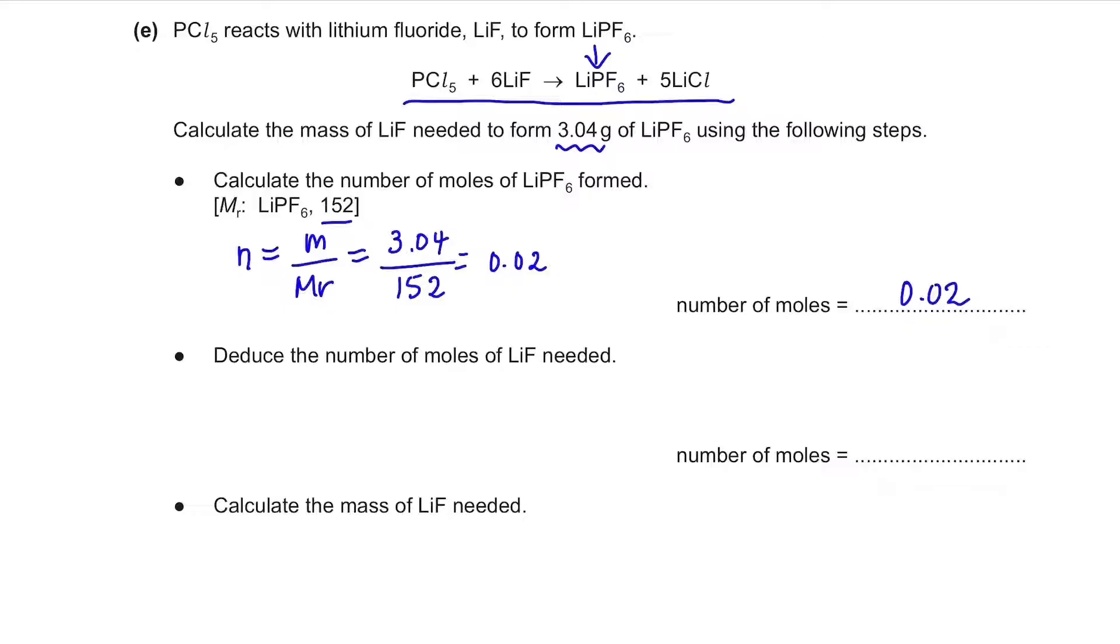Next, deduce the number of moles of LiF needed. We can see that there's 1 mole of LiPF6 for every 6 moles of LiF. So since the number of moles of LiPF6 is 0.02, for LiF, we'll just have to multiply it by 6. And this will give 0.12.